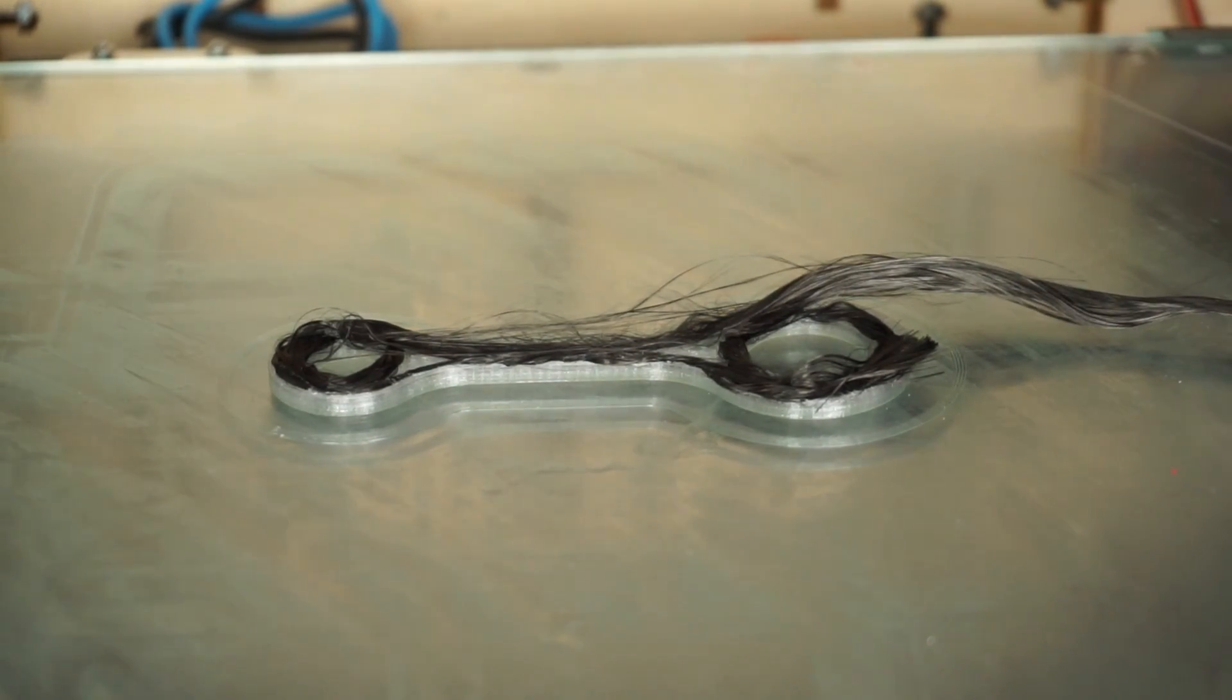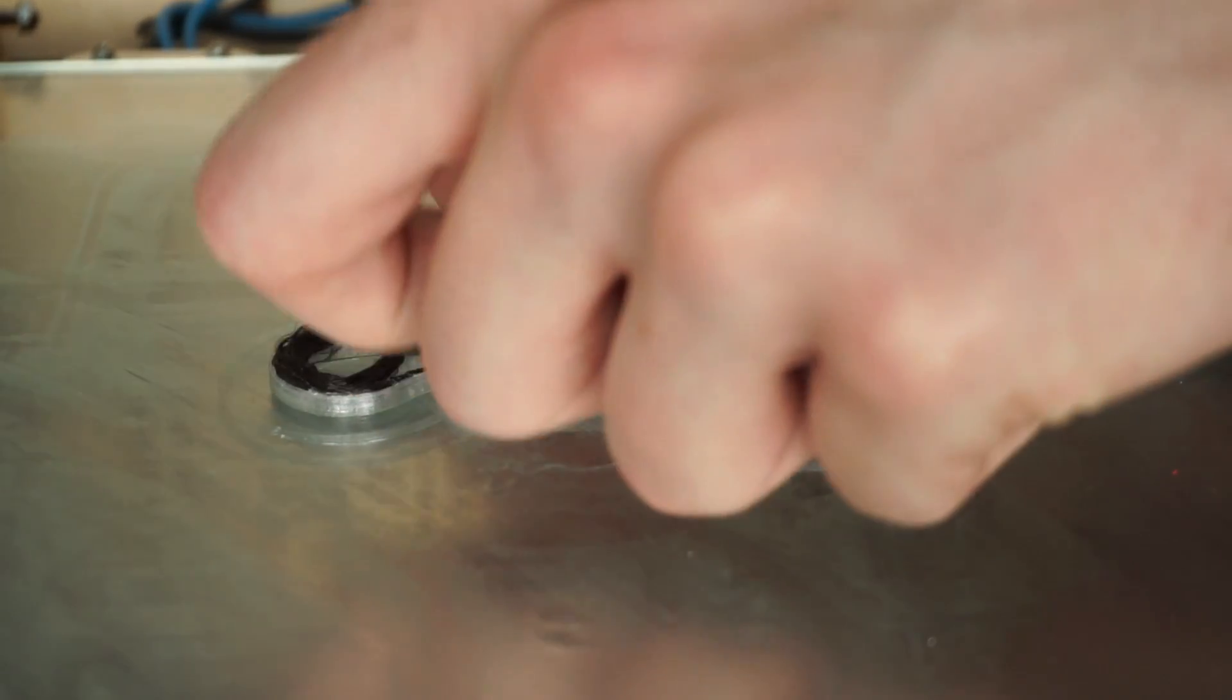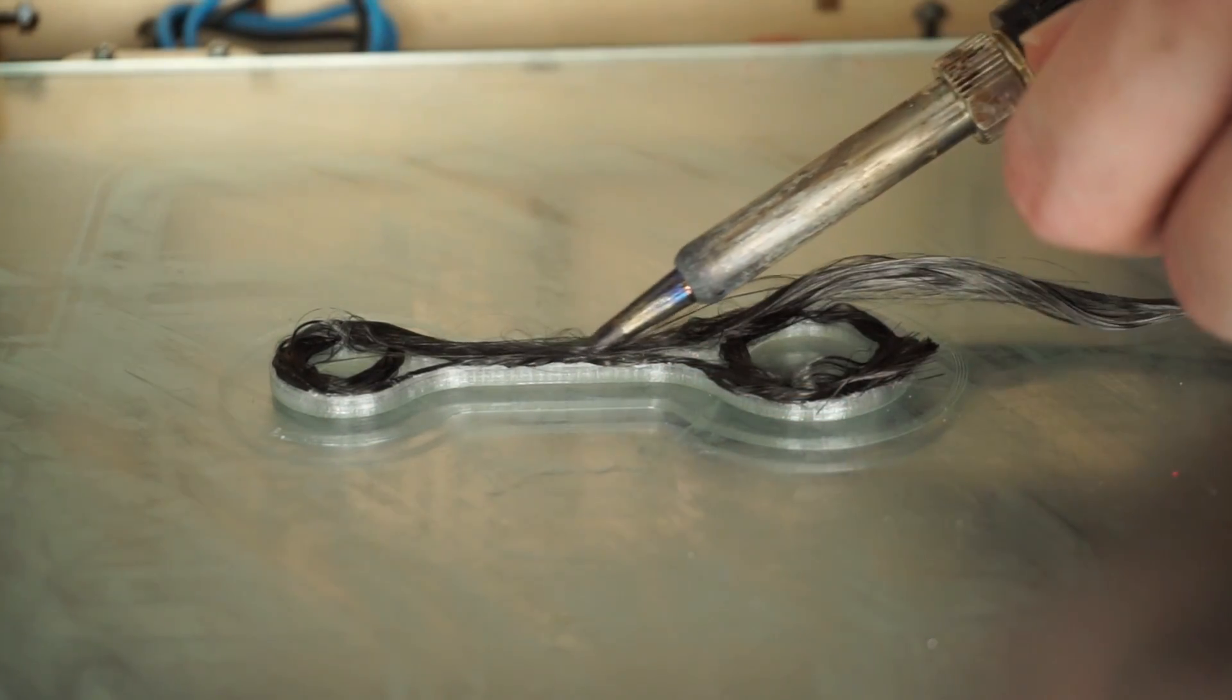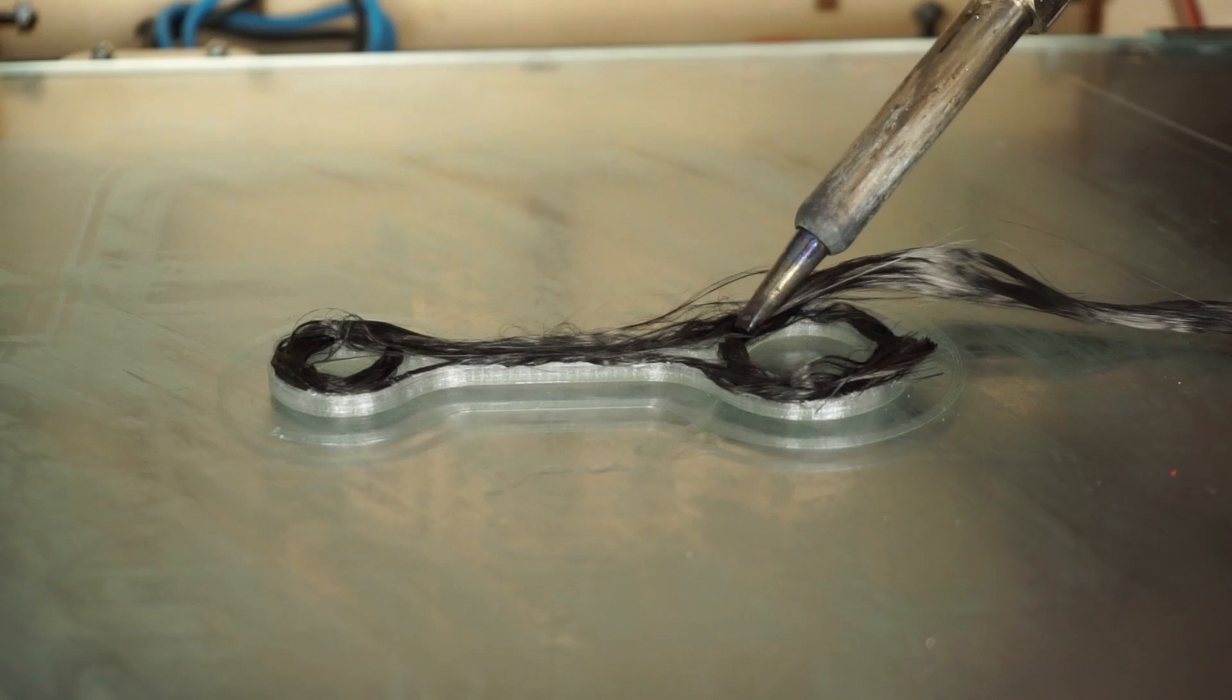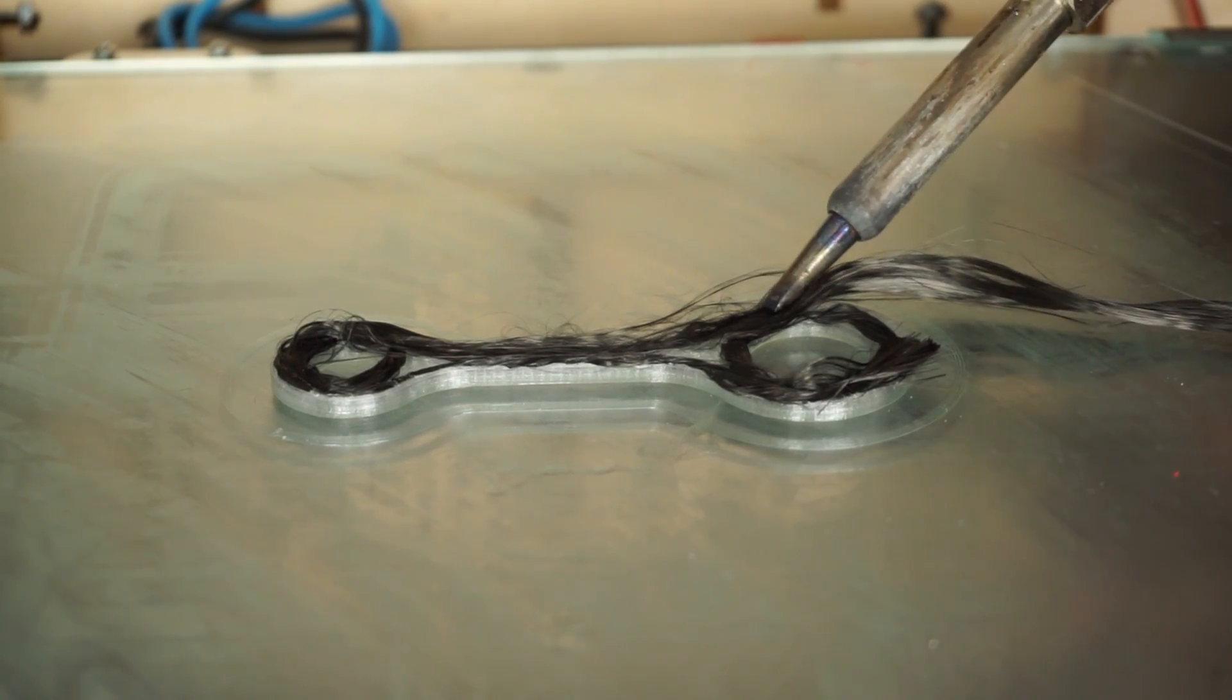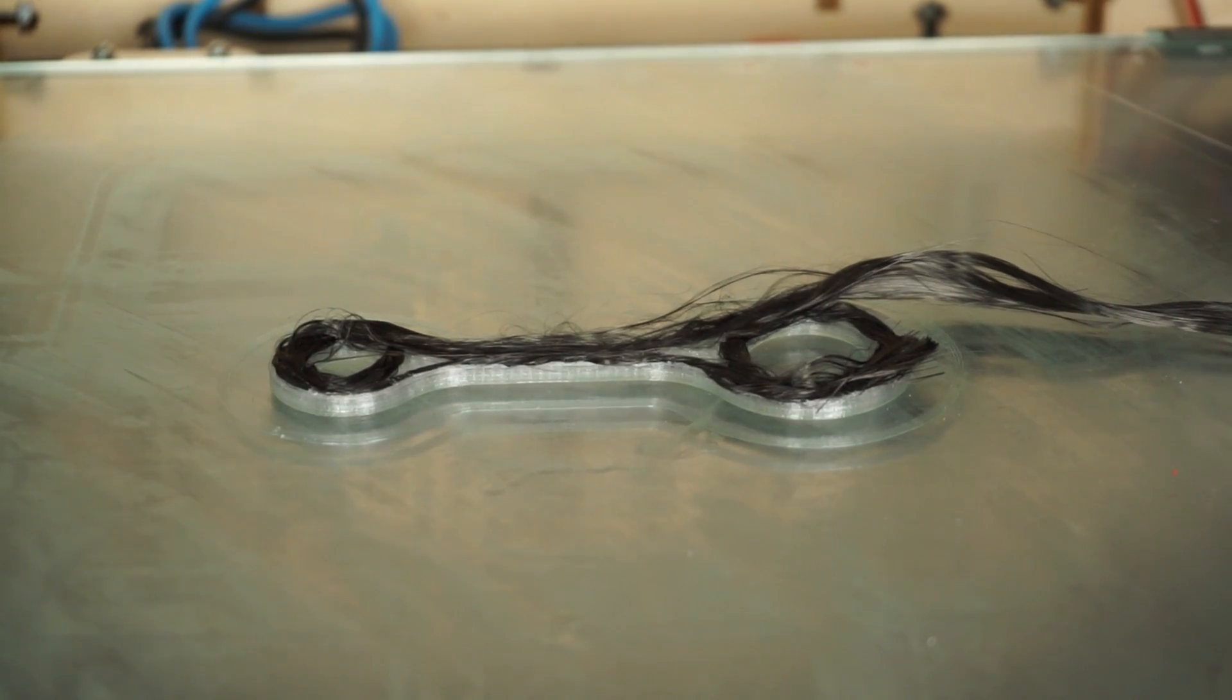Problem number one: it's pretty hard to control 24,000 individual fibers. They tend to spread apart and it's just a pain to work with them. A possible solution would be to twist the fibers by hand or with a drill and use a drop of super glue to keep them together.